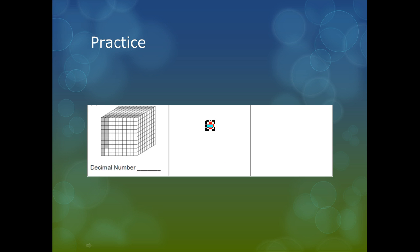In our last example, we have 18 out of 1000 shaded, or 18 thousandths. I write this as 0.018, 18 thousandths.